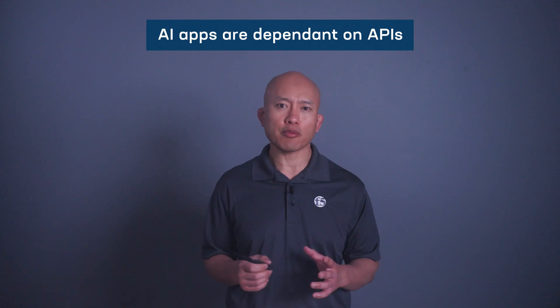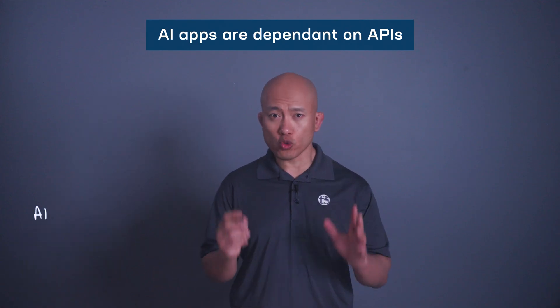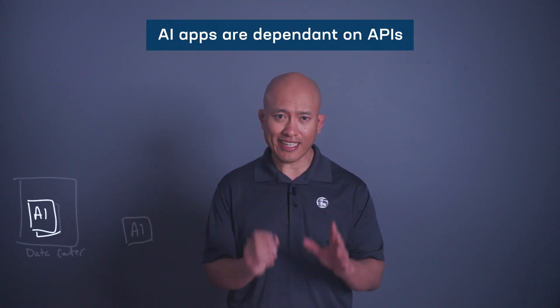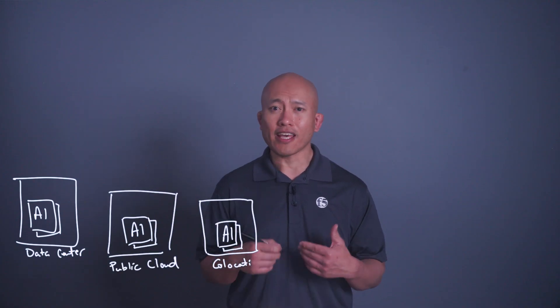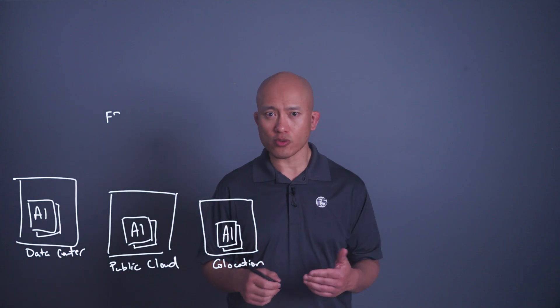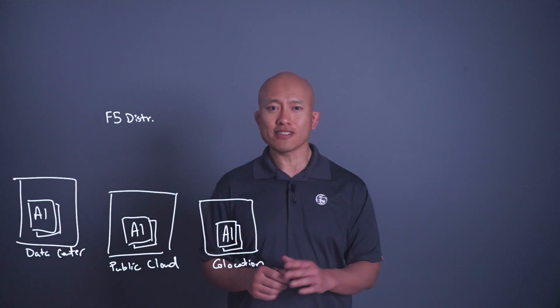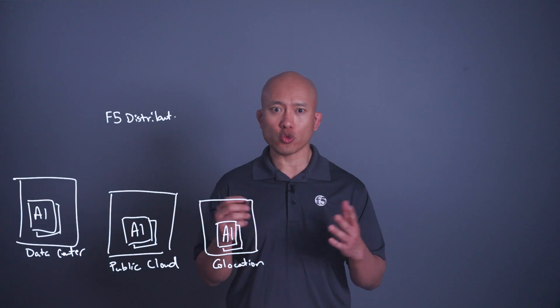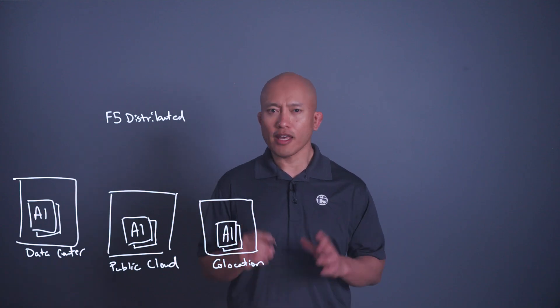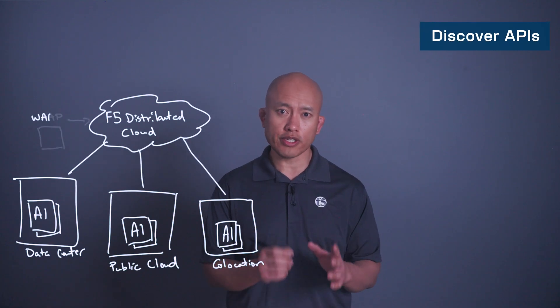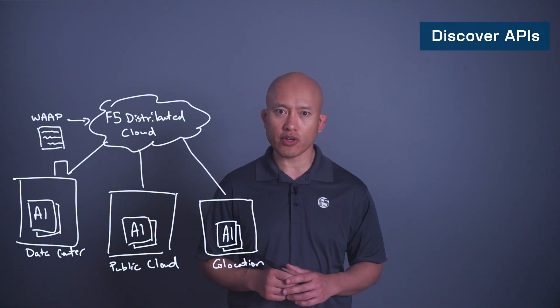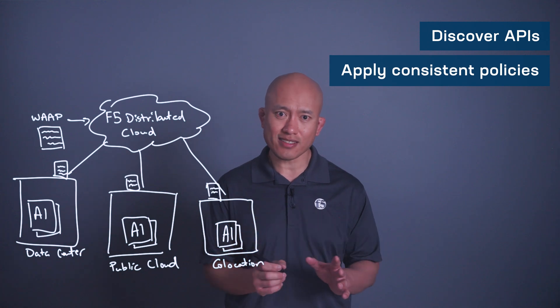If we dig a little deeper, AI application communications will typically happen over APIs. While this is great for quickly establishing standardized communication patterns between the services that comprise an AI application, APIs pose security challenges when they're not documented properly or at all, leading to a lack of visibility to what you're trying to secure. F5 distributed cloud WAP services allows you to discover APIs running through your hybrid multi-cloud environments and apply security policies consistently to those APIs once they are discovered.